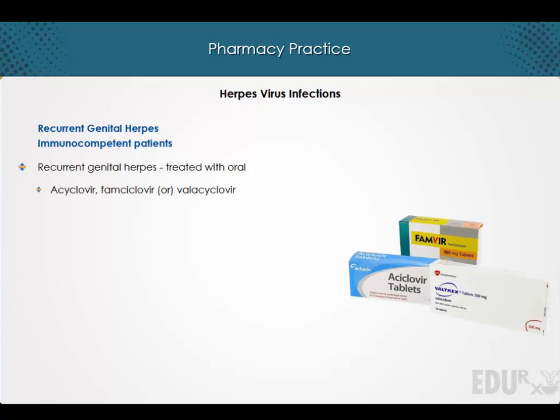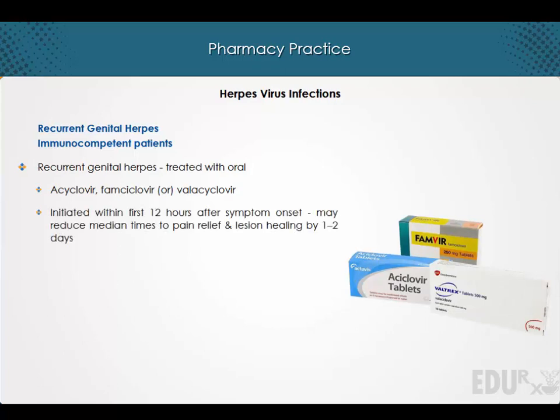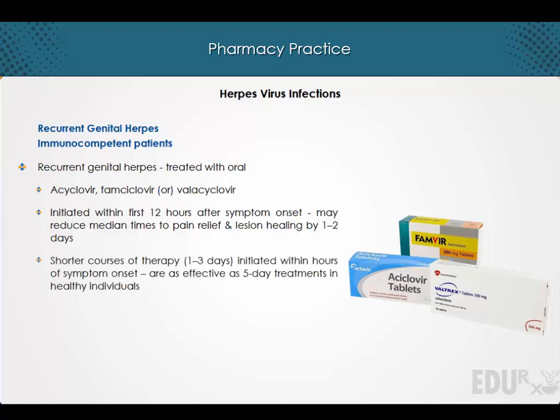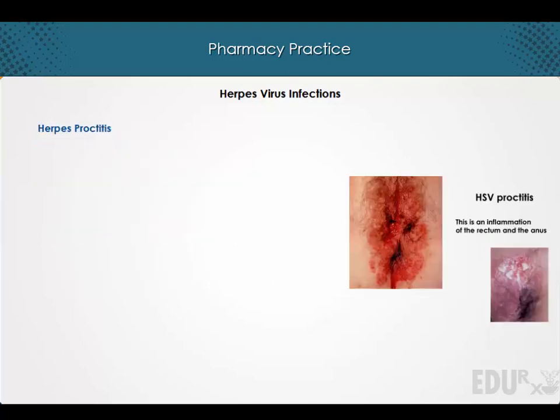Recurrent genital herpes in immunocompetent patients is treated with oral acyclovir, famciclovir, or valacyclovir. When initiated within the first 12 hours after symptom onset, these agents may reduce median times to pain relief and lesion healing by about one to two days. Shorter courses of therapy initiated within hours of symptom onset appear to be as effective as five-day treatments for episodes of recurrent genital herpes in healthy individuals.